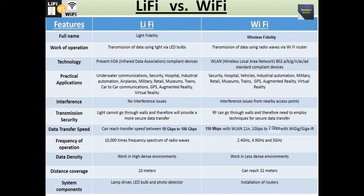For data transfer speed: Li-Fi can reach transfer speeds between 10 to 100 Gbps, while Wi-Fi achieves 150 Mbps with WLAN 802.11n, or 1 Gbps to 2 Gbps with Giga-IR. For frequency of operation: Li-Fi uses 10,000 times the frequency spectrum of radio waves, while Wi-Fi uses 2.4 GHz, 4.9 GHz, and 5 GHz. For data density: Li-Fi works in high-density environments, while Wi-Fi works in less dense environments. Distance coverage: Li-Fi covers about 10 meters, Wi-Fi about 32 meters. System components: Li-Fi uses a lamp driver, LED bulbs, and photodetector, while Wi-Fi requires installation of routers.